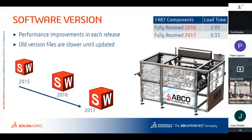Every year SolidWorks improves its file format. Older version files are slower until they're updated to the current version. For example, fully resolving an assembly in 2016 took two minutes; the same assembly in 2017 took 33 seconds. Saving files in the current version reduces both load time and file size.